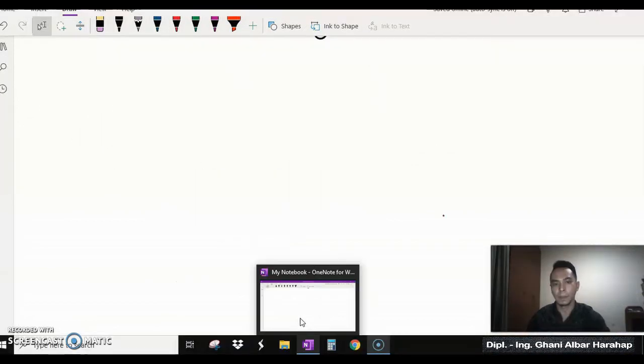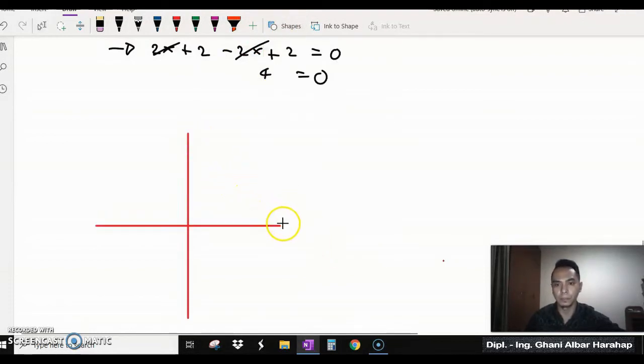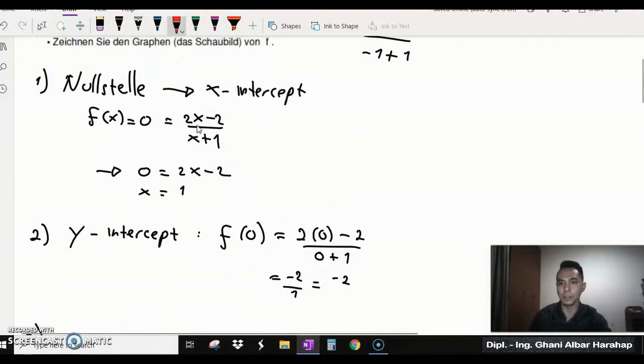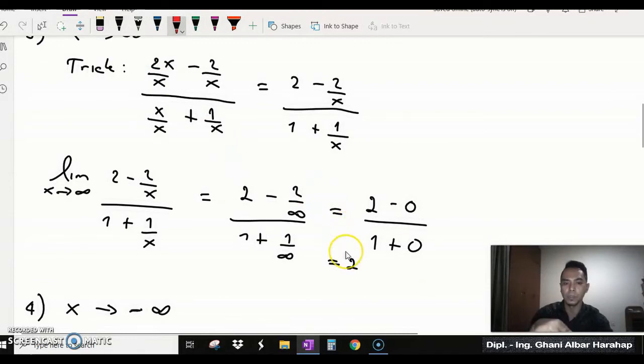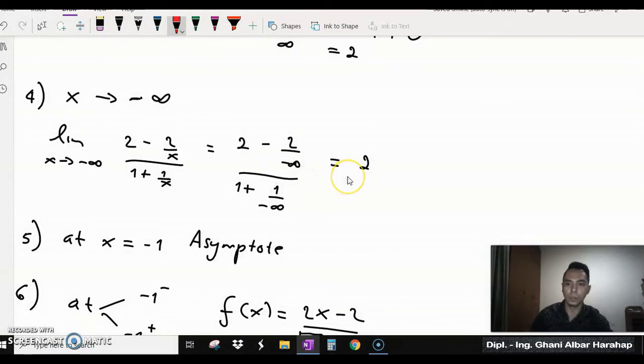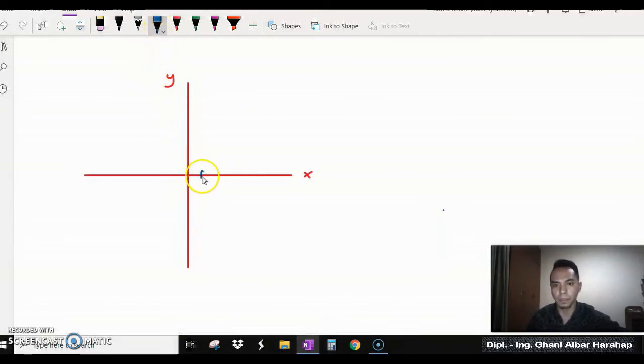Now we can try to sketch our function with all the data we have. So you remember the x-intercept here is 1, y-intercept minus 2. X goes towards infinity and your y goes towards 2. Your x goes minus infinity and your y goes towards 2. Yeah, with all this data we can try to sketch everything. So here is minus 1, sorry, here is 1, x-intercept, and here is minus 2, y-intercept. And here is your limit, and at minus 1 here you have an asymptote.